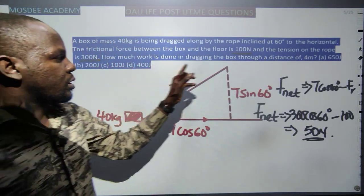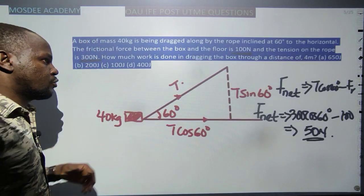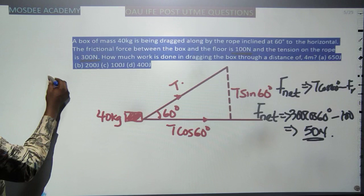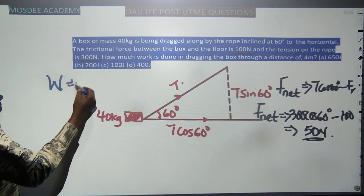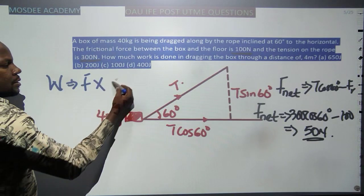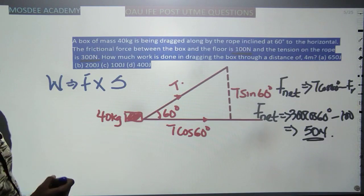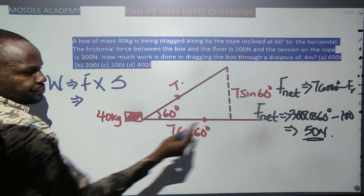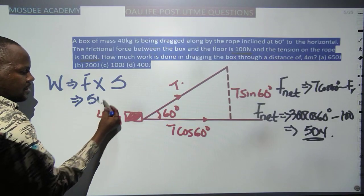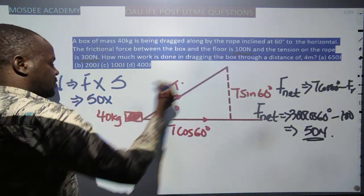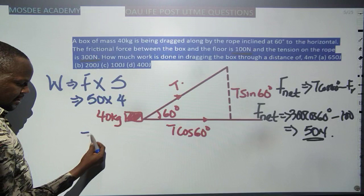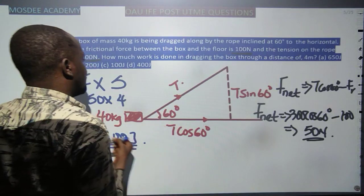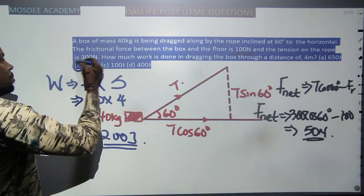How much work is done dragging the body through a distance of 4 metres? Work done equals force multiplied by perpendicular distance in the direction of motion. F = 50 N, distance = 4 m. Work done = 50 × 4 = 200 joules. This gives the right answer, which is option B.